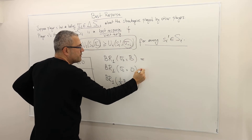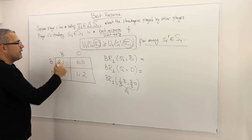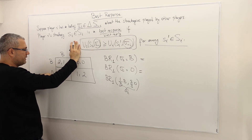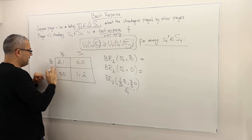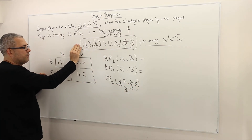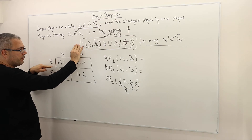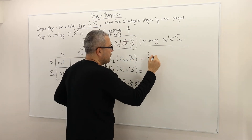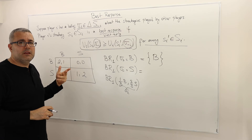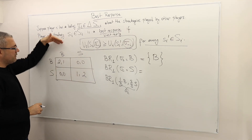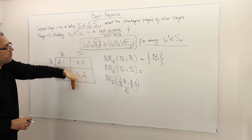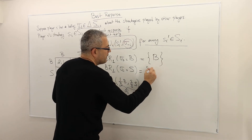The first two cases are relatively straightforward. If the second player is playing B, then player one gets two if he plays B and zero if he plays S. The payoff-maximizing strategy for player one is clearly B because it gives a payoff of two, while S gives zero. So player one's best response to player two playing B is B. If my opponent is playing S for sure, it's zero versus one — so S is the best response. Clear.